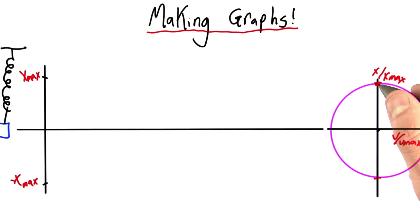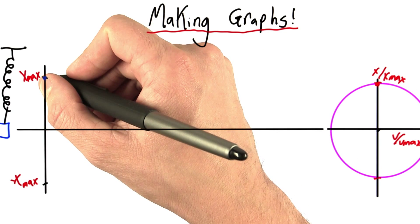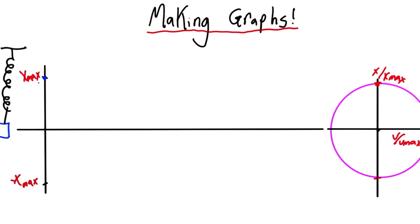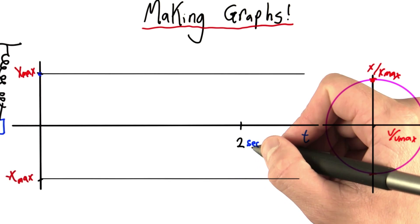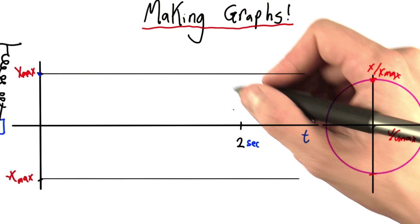What if I want to know position versus time? Well, at time equals zero, our mass started up here at x max. Remember, the period was 2 seconds. So after 2 seconds, one cycle or one period,